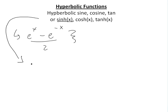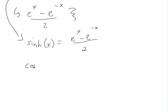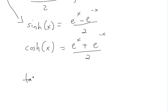So basically, here's what these are all defined as. Sinh of x is equal to e to the x minus e to the negative x, divided by 2. And cosh of x is equal to e to the x plus e to the negative x, divided by 2. And tanh of x is just equal to sinh over cosh of x - same thing as with trig.